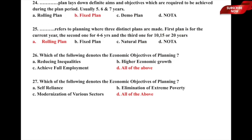Question 24: Dash plan lays down definite aims and objectives which are required to be achieved during the plan period — usually 5, 6, or 7 years — whether it is a) rolling plan, b) fixed plan, c) demo plan, or d) none of the above. The correct answer is option b) fixed plan.